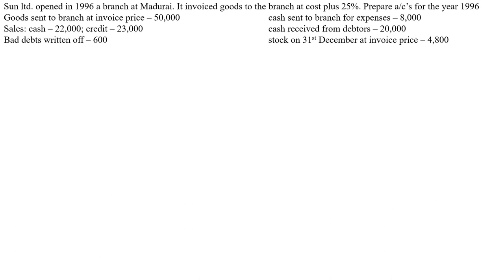Let me take an example. Sun Limited opened a branch at Madurai in 1996. It invoiced goods to the branch at cost plus 25%. We need to prepare accounts for the year 1996. The data given includes goods sent to branch at invoice price, cash sent for expenses, cash sales, credit sales, cash received from debtors, bad debts written off, and closing stock at invoice price on 31st December. Since values are at invoice price and profit is cost plus 25%, this is clearly an invoice price problem.